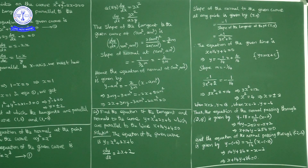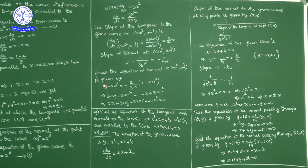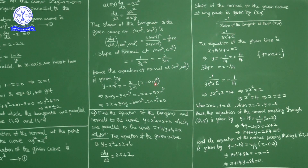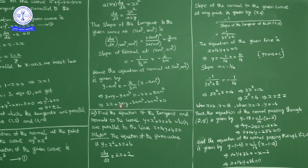Slope of the normal is -2/(3m) and the point is (am², am³). Equation of normal: y - am³ = (-2/3m)(x - am²). Cross-multiplying: 3m(y - am³) = -2(x - am²), giving 3my - 3am⁴ = -2x + 2am². So the equation of the normal is 2x + 3my - 3am⁴ - 2am² = 0.